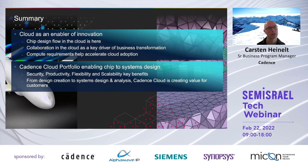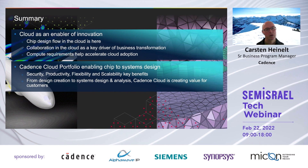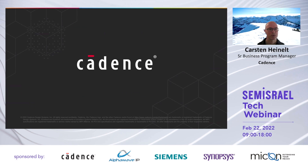So as a summary, cloud is an enabler for innovation. The chip design flow in the cloud is here today. Collaboration in the cloud is a key driver for business transformation, and the compute requirements help you accelerate your cloud adoption. The Cadence cloud portfolio is enabling chip-to-systems design and gives you the key benefits of security, productivity, flexibility, and scalability that cloud offers. You can do everything from design creation to systems design and analysis in the Cadence cloud, creating value for you. Thank you very much. This concludes our presentation.